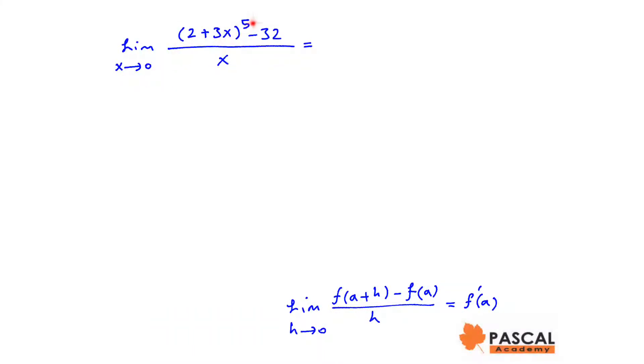Limit of 2 plus 3x to the power of 5 minus 32 divided by x as x approaches 0 is the derivative of function f of x at x equals a. Determine the equation of the function and the value of a.